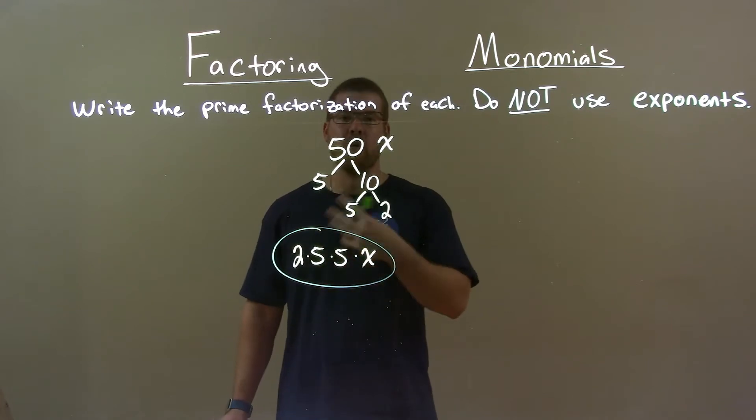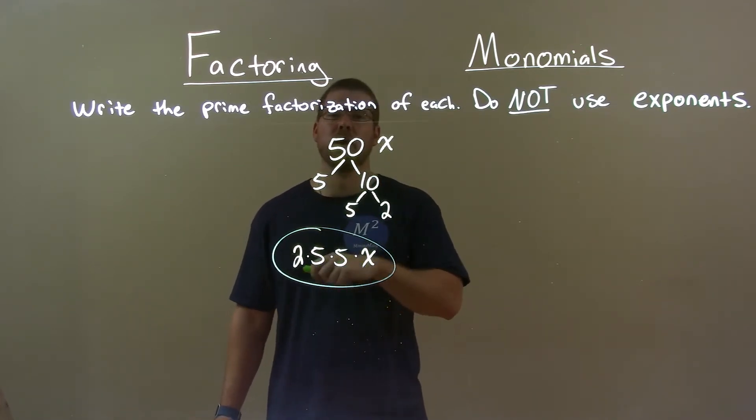So, with rearranging our final answer, 2 times 5 times 5 times x.